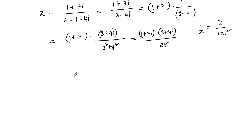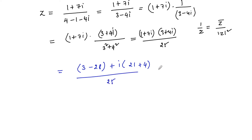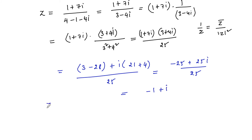Let us multiply (1 + 7i) into (3 + 4i). We get 3 + 4i + 21i + 28i², which gives (3 - 28) + (21 + 4)i, so that is -25 + 25i upon 25, or we can write this as -1 + i. So the complex number z is equal to -1 + i.